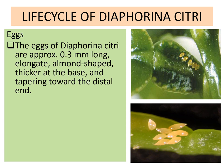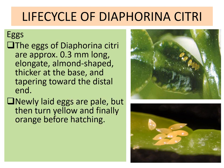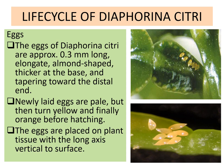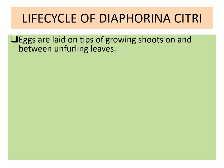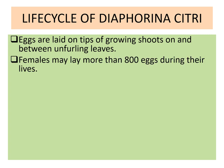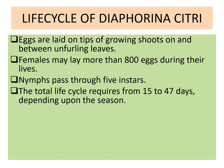The life cycle of Diapherina citri includes eggs. The eggs are approximately 0.3 mm long, elongated and almond-shaped, thicker at the base and tapering towards the distal end. Newly laid eggs are pale but then turn yellow and finally orange after hatching. Eggs are placed on plant tissues with a long axis vertical to the surface, laid on tips of growing shoots and between unfurling leaves. The female may lay more than 800 eggs during her life. Nymphs pass through five instars. The total life cycle requires 15 to 47 days depending on the season.